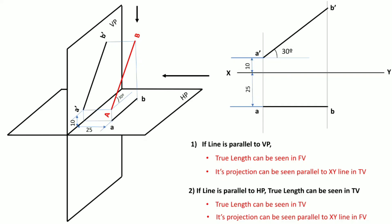In the next video, we will see the projection of a line when it is inclined to both planes. We have just seen how a line parallel to one plane and inclined to another is projected on the vertical and horizontal planes. Next, we will see how to project a line that is inclined to both planes. Keep practicing, thanks!